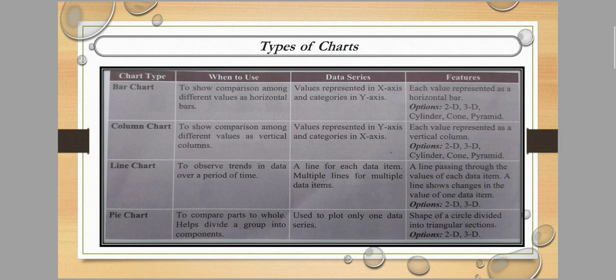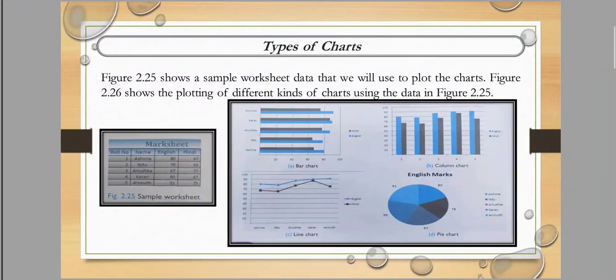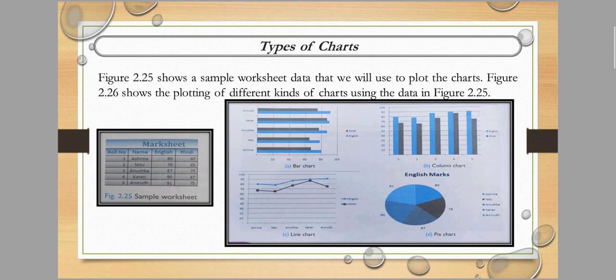Next is the line chart. It is used to observe trends in data over a period of time. For example, we can check day-to-day increases using a line chart. For multiple data items, multiple lines are drawn. A line passes through the values of each data item, showing changes in the value of one data item over time.